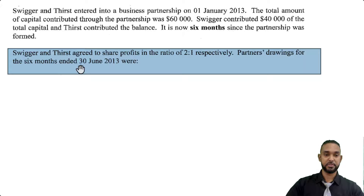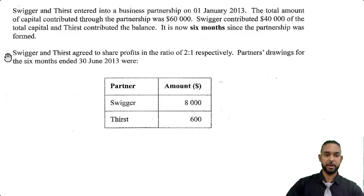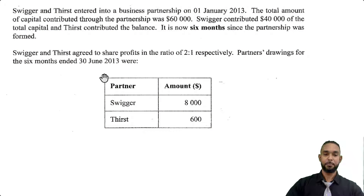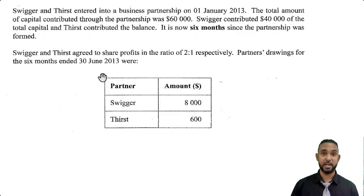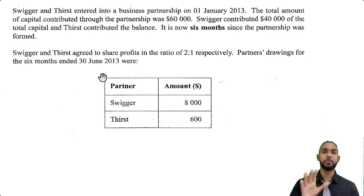The question provides a table showing partners' drawings for the six months ended 30th June 2013. It's important to note it says 'six months' — this means we've only been in operation for six months. So things like interest on capital, interest on drawings, and annual salaries will all need to be adjusted for the six-month period, since that's only half of the year.